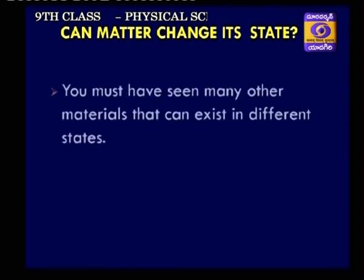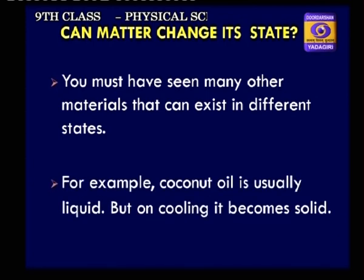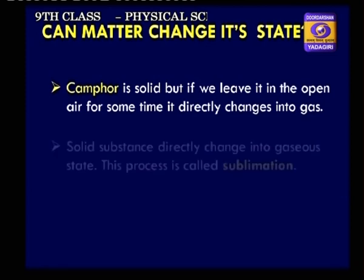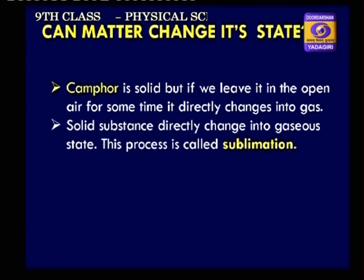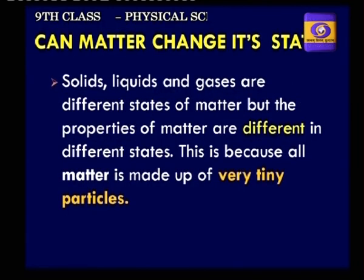Can matter change its state? Many materials exist in different states. Coconut oil is usually liquid, but on cooling it becomes solid. Camphor is solid, but if left in open air, it directly changes into gas. A solid substance directly changing into a gaseous state is called sublimation. Examples include naphthalene balls, camphor, and ammonium chloride crystals. The properties of matter differ in different states because all matter is made up of very tiny particles.